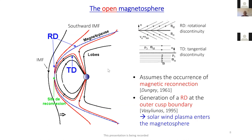Sorry about that — my kids were shouting next door. So the solar wind plasma can enter easily through the reconnection process, creating a rotational discontinuity, as opposed to a tangential discontinuity. With a rotational discontinuity created through reconnection, plasma can flow through the boundary and populate the whole magnetosphere with solar wind plasma.